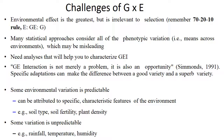Coming to the challenges of gene-environment interaction. When the environmental effect is greater but irrelevant to the selection, many statistical approaches consider all the phenotypic variations like means across environments, which may be misleading. There is a need for analysis that will help to characterize G×E interaction. This is not merely a problem — it is also an opportunity. Specific adaptations can make the difference between a good variety and a superb variety. Some environmental variation is predictable and can be attributed to specific features of the environment like soil type, soil fertility, plant density. Some variation is unpredictable, like rainfall, temperature, humidity, etc.